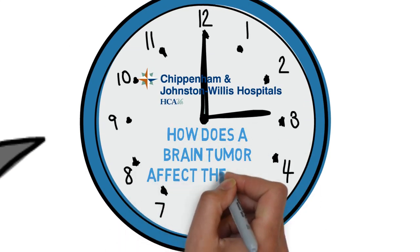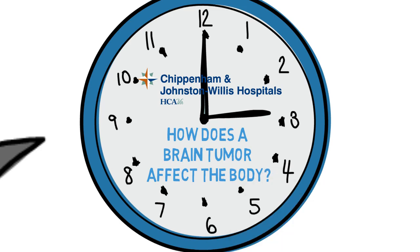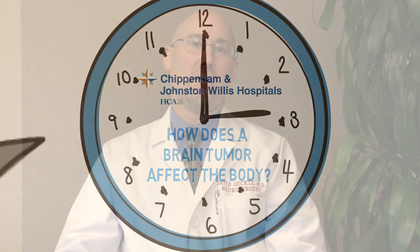How does a brain tumor affect the body? The effects that brain tumors have on the body are very dependent on several factors. One is the location of the tumor within the brain. Another is the size of the lesion as well as its rate of growth.